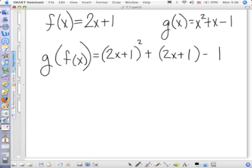You're taking your G of X function, leaving parentheses everywhere you see the X, and then plug the F of X function in. What are you required to do in this very first part? Foil, because it's 2X plus 1 squared, which is going to give you 4X squared plus 4X plus 1, and then to that you're adding 2X plus 1, and then you're subtracting 1.